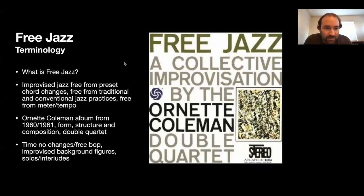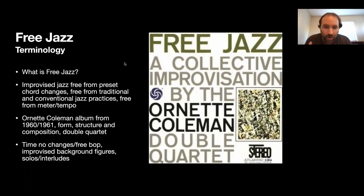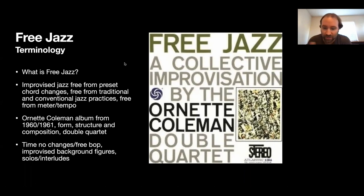With chord changes, you could have a piece like George Gershwin's rhythm changes, which follows an AABA form and has a certain kind of structure and harmony that's preset. After the melody and head statement is played, improvisers would play that same structure and chord progression, chorus after chorus, 32 bars, repeating that over and over again.